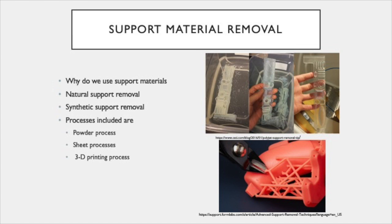A synthetic support is defined as a rigid structure which is designed and built to support, restrain, or attach the part being built to a build platform. Typically, these supports can either be made of the same materials used to build or a secondary material. The secondary material development allows the removal process to be greatly simplified. Similar to the evaporative foam processes, these secondary materials can be designed to be soluble or melt away at low temperatures, greatly increasing the speed at which a part can be removed and simplifying the process.